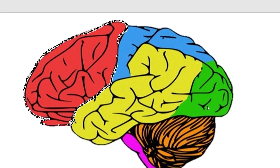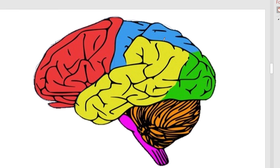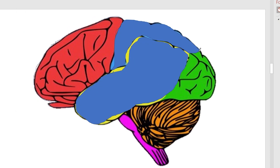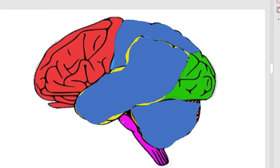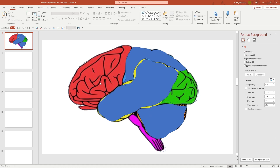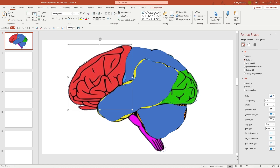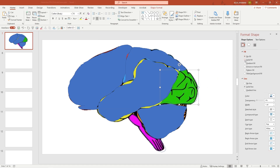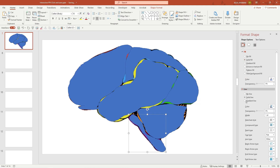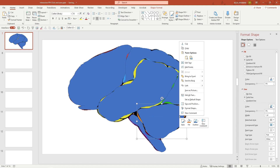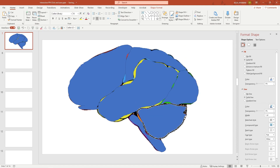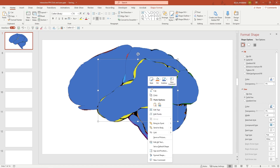Now let me go ahead and complete the other parts of the brain. I have completed all the scribbles. Now what I'm going to do is select all of them and completely fill them with the color that I want. It doesn't matter what color you fill because you're going to see why in a second. The brain is completely filled up with blue color. If you want to edit the points, all you have to do is drag them. It doesn't have to be perfect, because we know students will not be clicking on the edges.